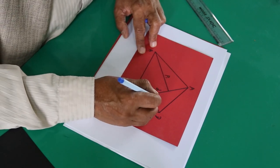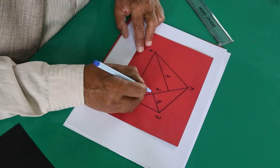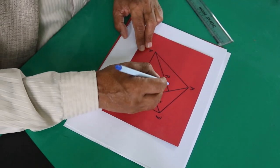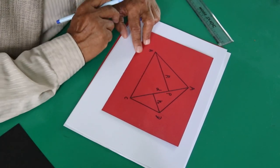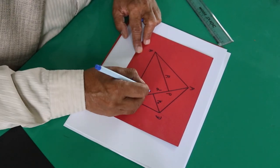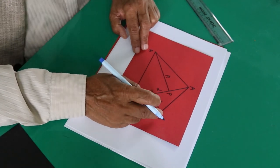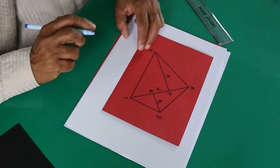We can name the foot of the perpendiculars as point P. BP is one offset, another is DQ. These are the perpendiculars to a diagonal from the opposite vertices. Offsets are that.